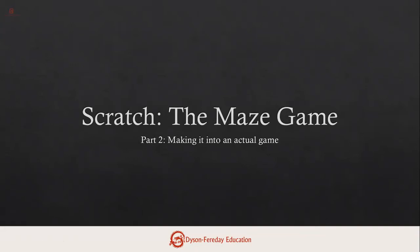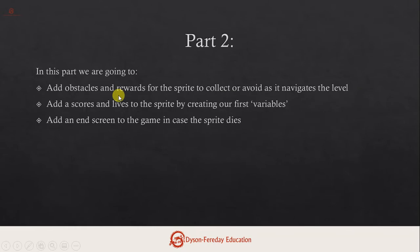This is the second part of our Scratch Maze game. We're going to take the basic structure we created last time and make it into a proper game by adding obstacles and rewards for the sprite to collect or avoid. We'll also add scores and lives, create our first variable, and add an end screen so there's a proper end to the game.